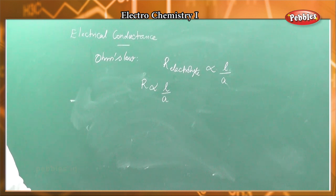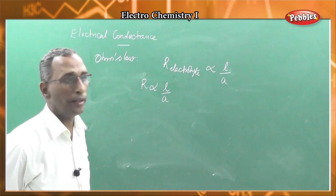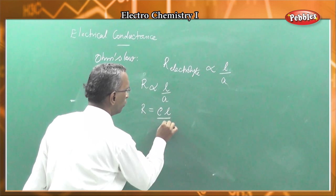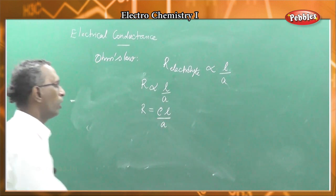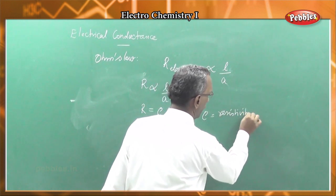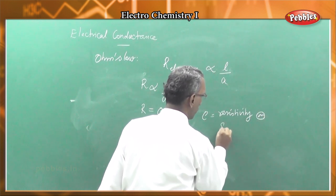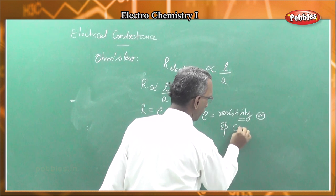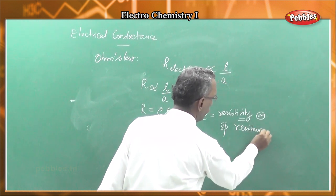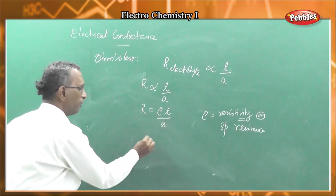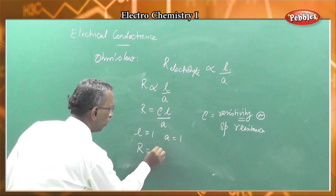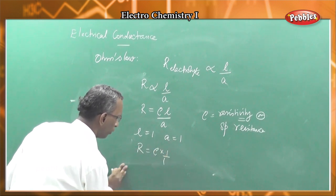For electrolytic conduction, the resistance offered by the electrolyte is directly proportional to the distance between the electrodes L and inversely proportional to the area of the electrodes A. Introducing a constant of proportionality, R equal to rho times L by A, where rho is the resistivity or specific resistance.